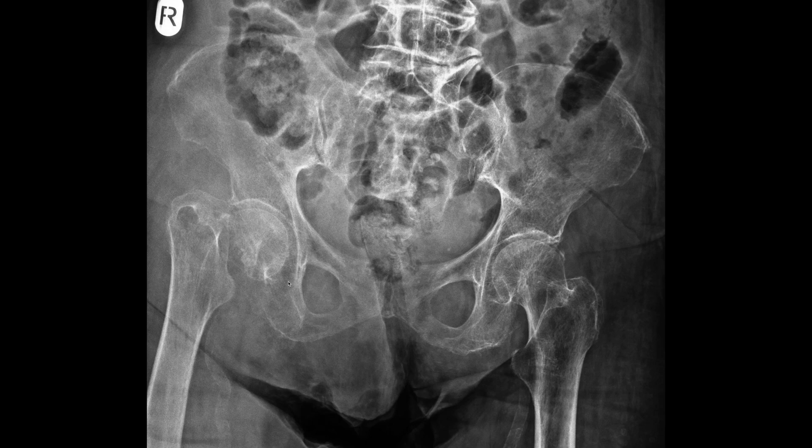Grade 3 is a complete fracture but with no displacement. Then grades 2 and 1 deal with more subtle findings: grade 2 being an undisplaced complete fracture, and grade 1 being an undisplaced incomplete fracture. So really only grade 1 is incompletely fractured — all other three grades are complete fractures, differing based on the degree of displacement.